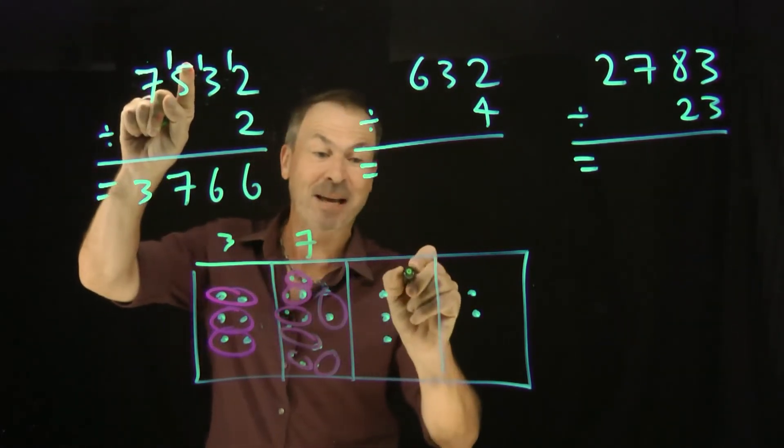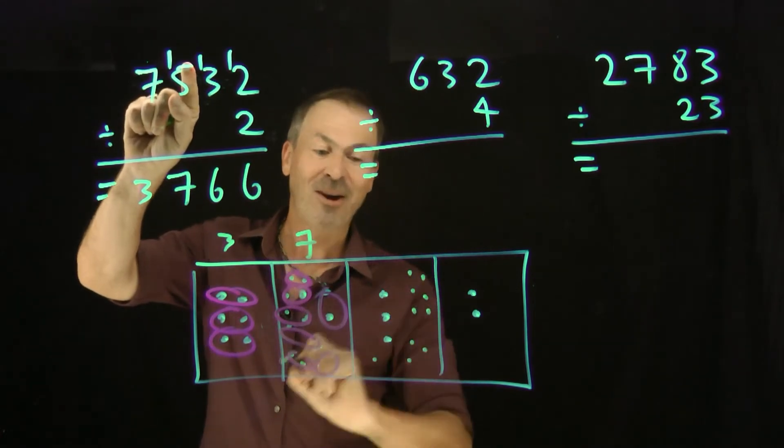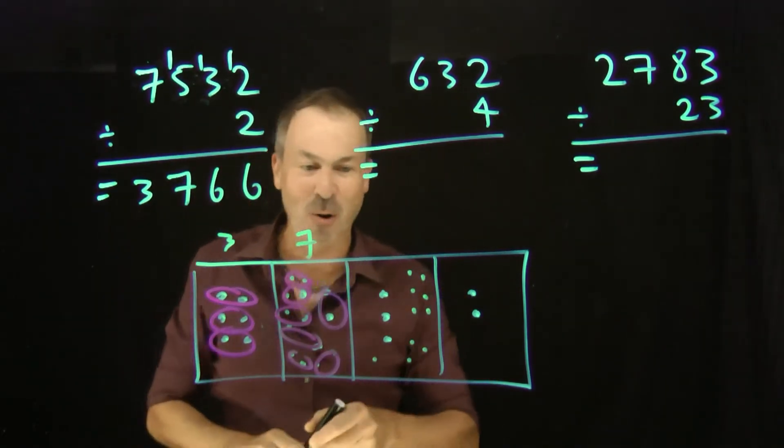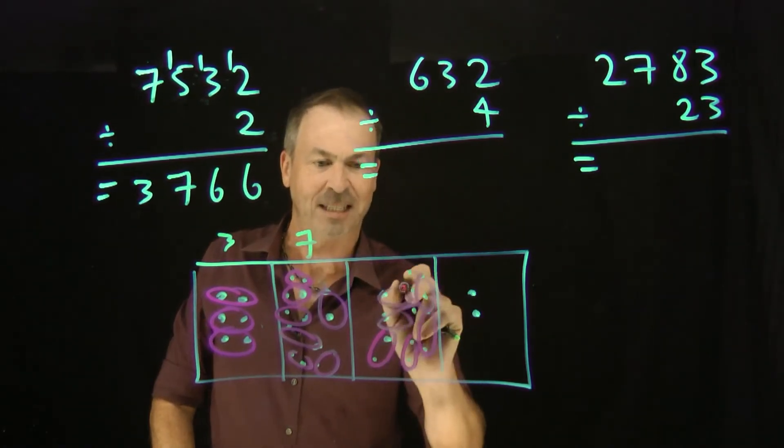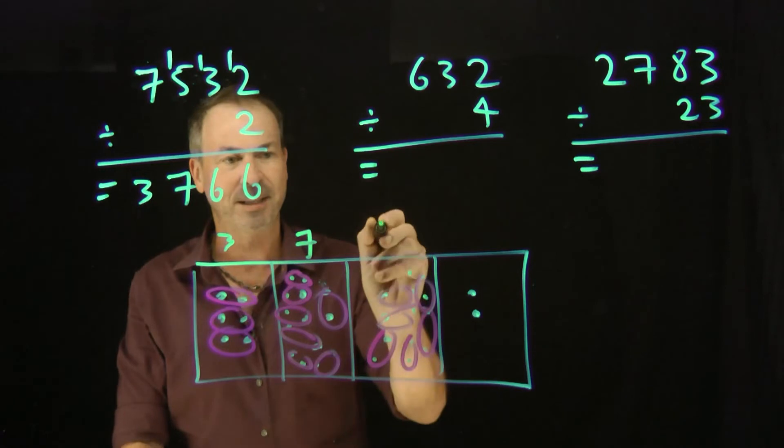But I'm going to unexplode that 1 and make this 3 suddenly become 13. There it is, 13. How many times does 2 go into 13? 6 times, I believe. 1, 2, 3, 4, 5, 6 with 1 left over. 6 with 1 left over.